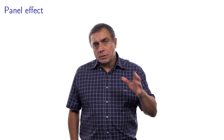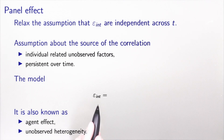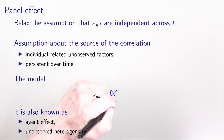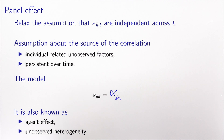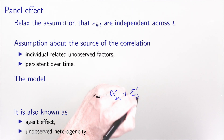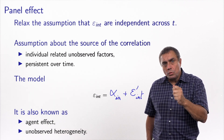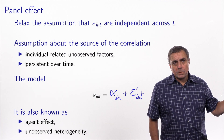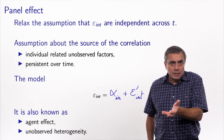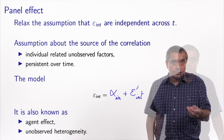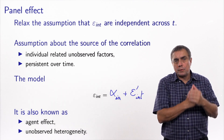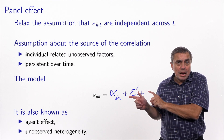How do we do that? We will use error components, an idea we have used several times before. The epsilon for alternative i, individual n, and time t is written as the sum of an error component related to i and n but not t, plus the remainder epsilon prime. This error component alpha_{i,n}, which does not depend on t, is designed to capture all unobserved factors related to the individual that are the same across time. It is known as the agent effect or panel effect, and captures unobserved heterogeneity. With this component in place, we can safely assume that the epsilon primes are independent across t.